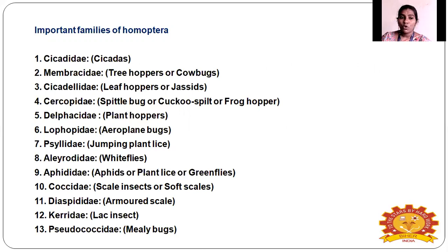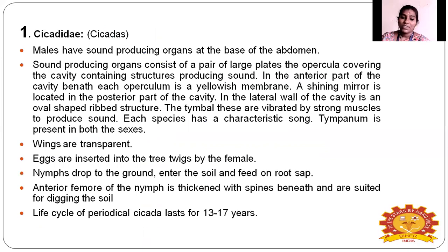Important families of Homoptera include: Cicadidae, Membracidae, Cicadellidae, Cercopidae, Delphacidae, Lophopidae, Psyllidae, Aleyrodidae, Aphididae, Coccidae, Diaspididae, Keriidae, and Pseudococcidae.